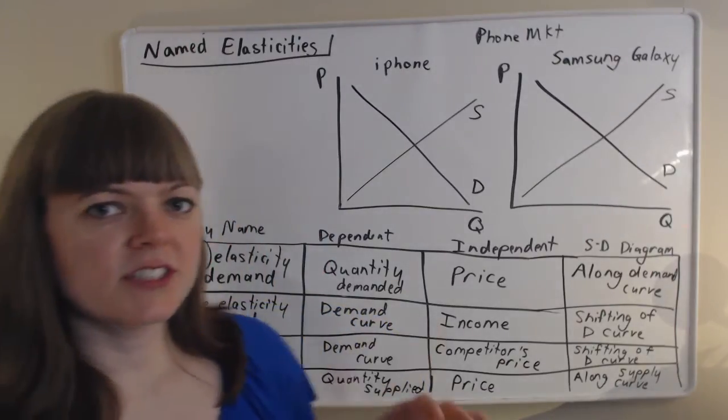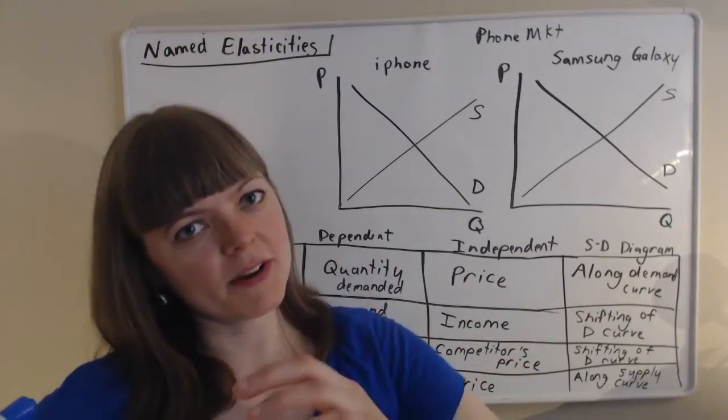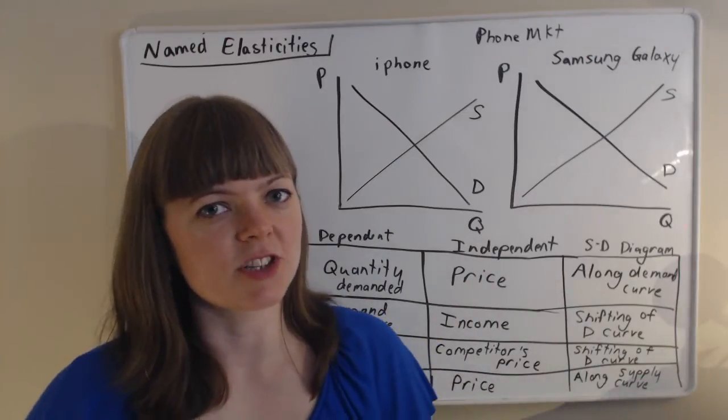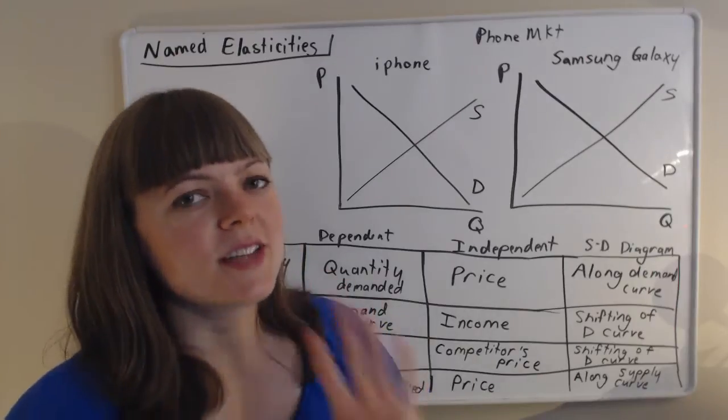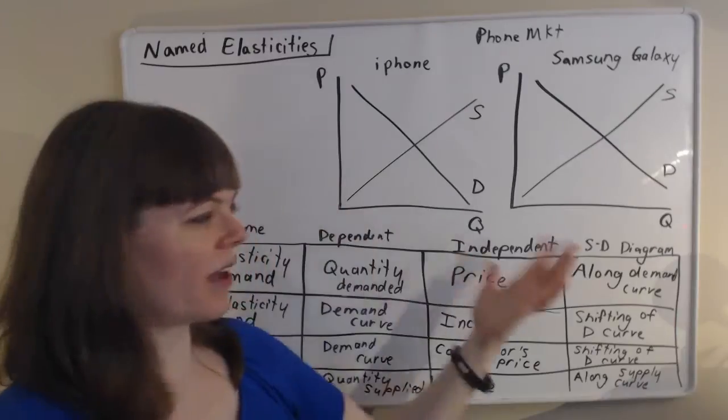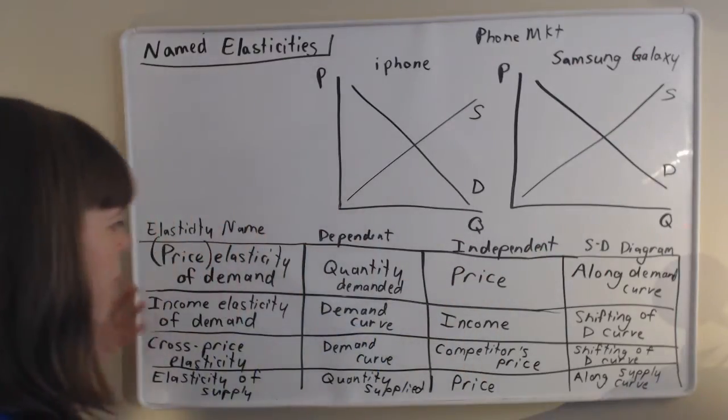And normally we just say the elasticity of the dependent variable with respect to the independent variable because there's all kinds of behavioral responses we can measure. But four of them are particularly dear to economists because they relate to supply and demand curves, which we love. So it's worth discussing these four.